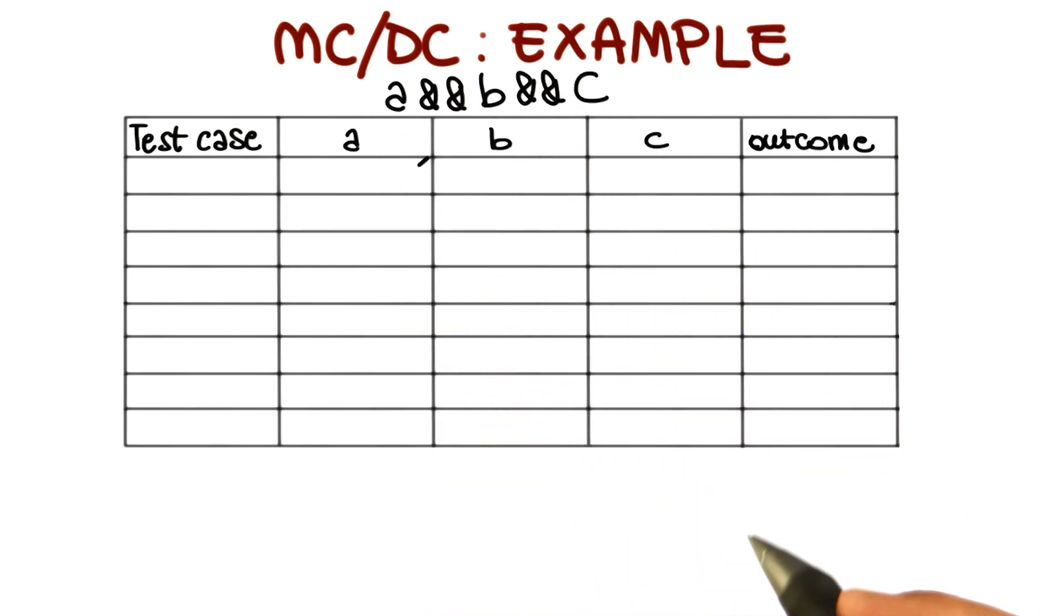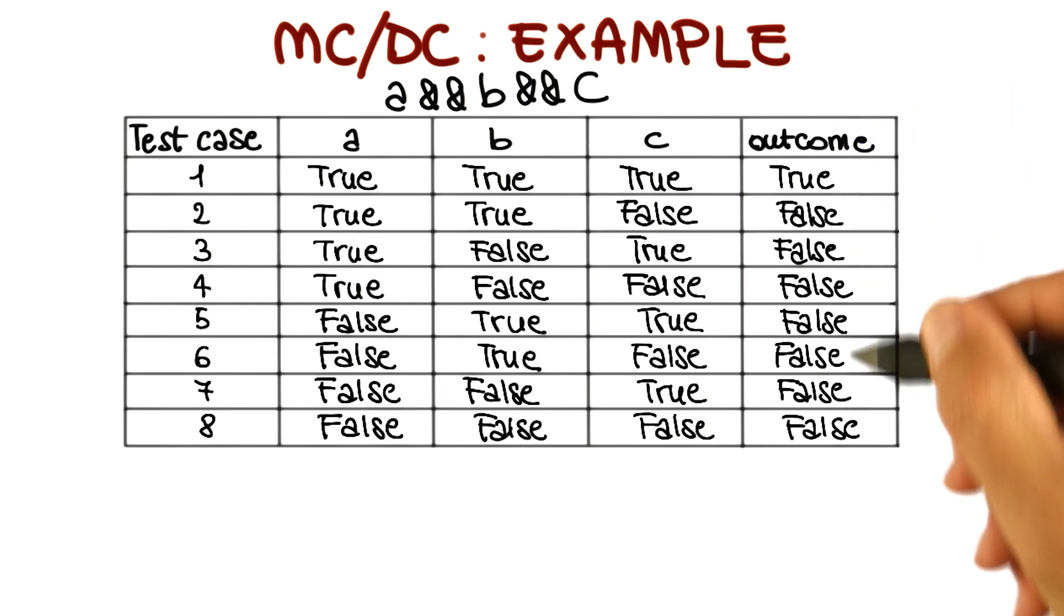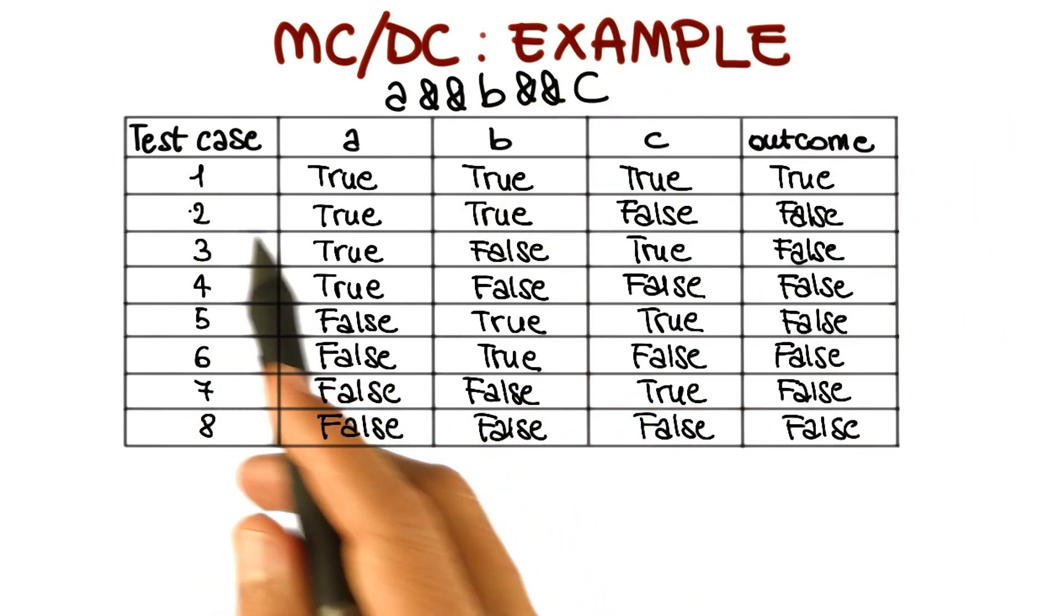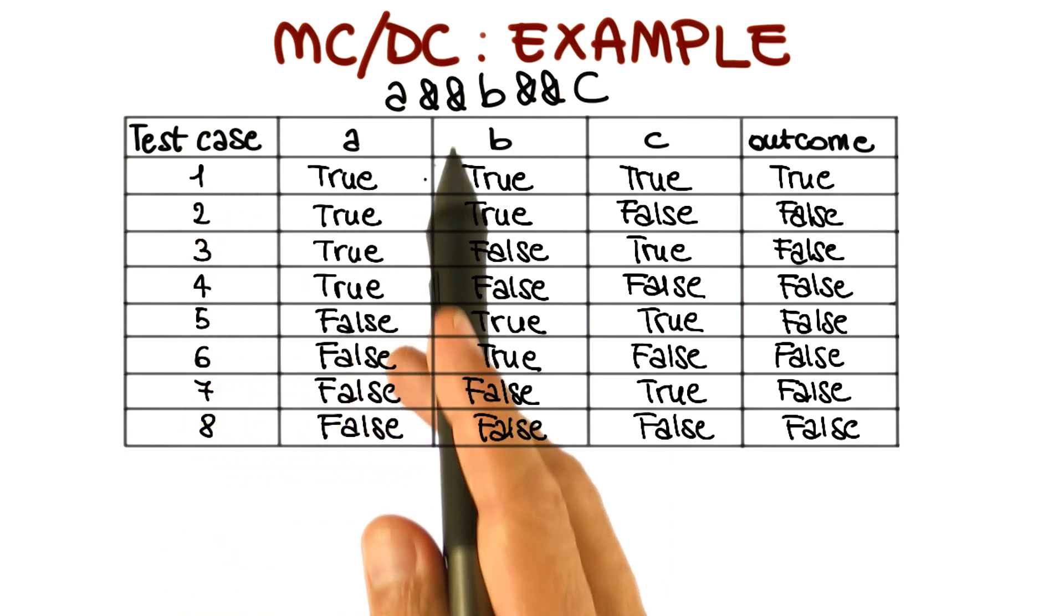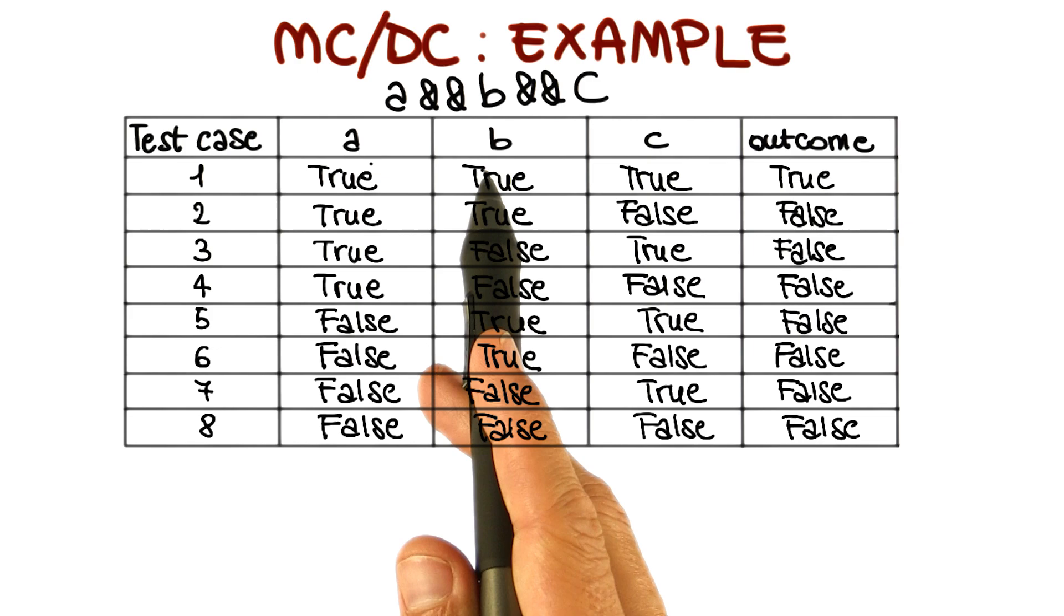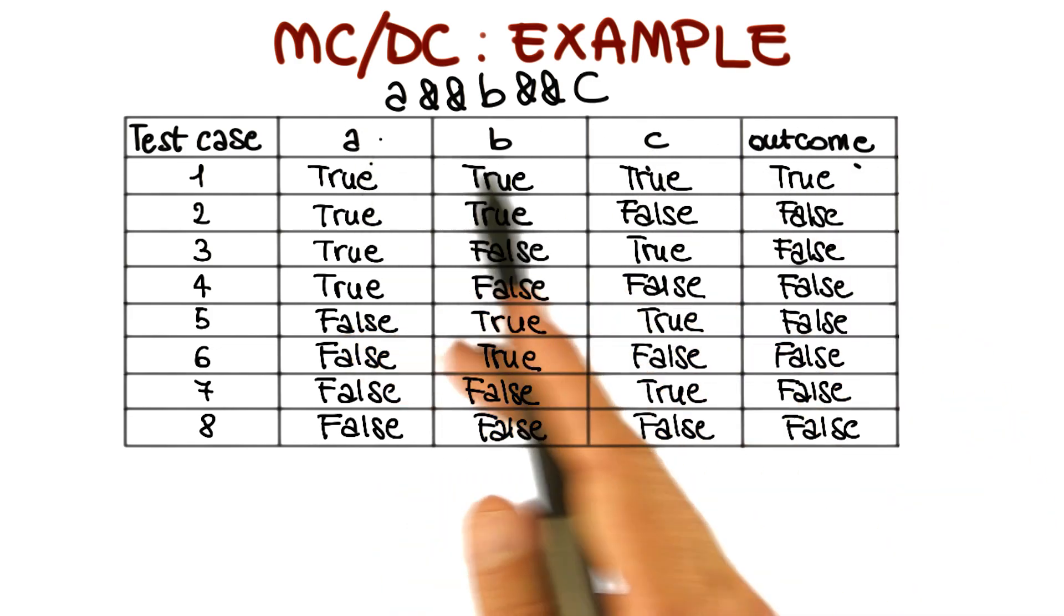I'm going to populate this table, and as you can see, at the end we have eight test cases. Each test case tests a different combination of values for A, B, and C. I'm also showing for each test case the outcome of the overall predicate. For example, if we look at the first one, the first test case will be such that A is true, B is true, and C is true, and therefore the overall outcome of the predicate is true.